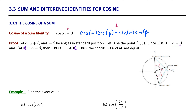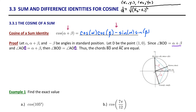With that understanding, let me remind you of the distance formula. If we have two points in the coordinate plane, (x₁, y₁) and (x₂, y₂), then the distance between those two points, which is based on the Pythagorean theorem, is given by the square root of the difference in the x-values squared plus the difference in the y-values squared.